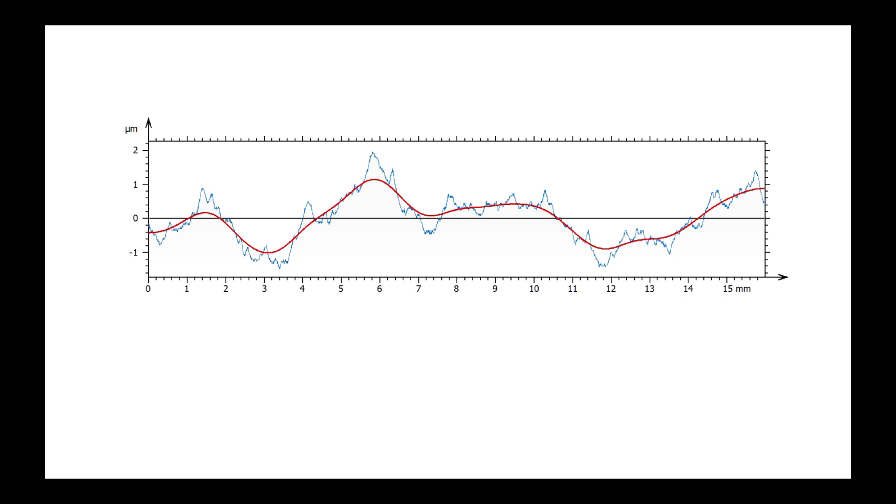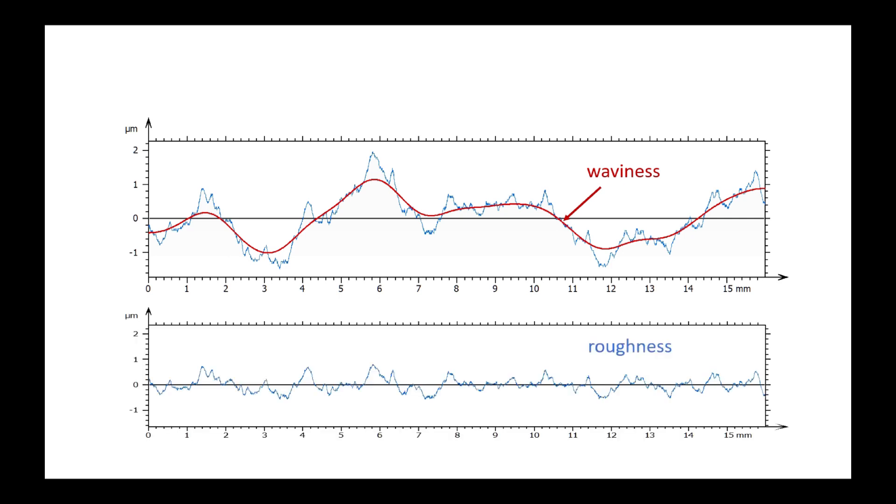A filter is used to calculate a simplified version of the profile that only contains the large height variation trends. It is the waviness profile. This waviness acts as a reference line for the roughness profile, since roughness corresponds to the deviation of the original profile with respect to the waviness profile. Roughness is therefore the result of the subtraction of waviness from the primary profile.